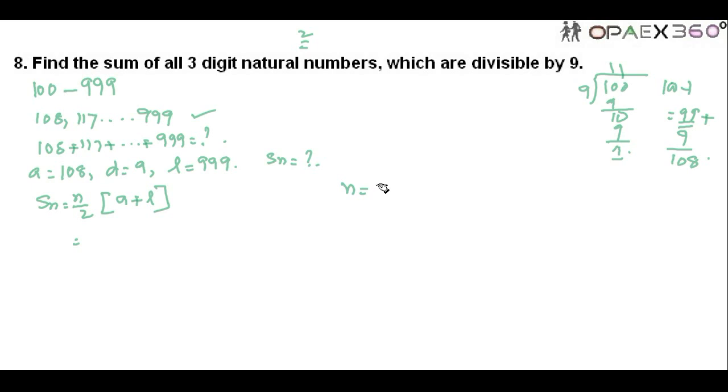So N is equal to, how will you find? The formula you know, L minus A by D plus 1. So L is equal to 999 minus 108 by 9 plus 1.